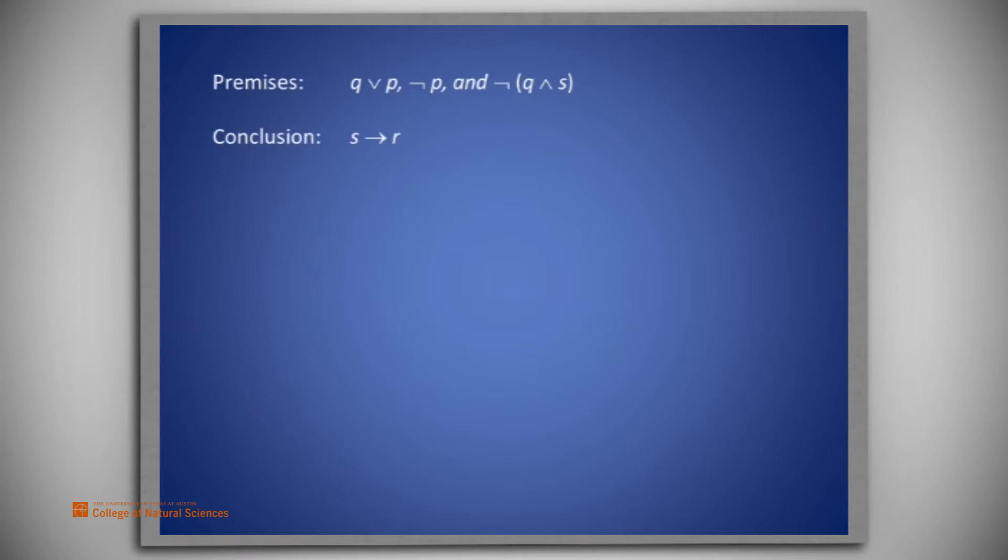How should we construct a proof of this? As we often do, we will try to argue backwards from the conclusion. The conclusion is S implies R. We look at the premises and see no mention of R.